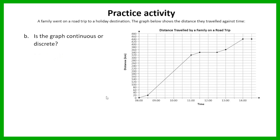The next question: is the graph continuous or discrete? You can see that the points have all been joined, which indicates that this is a continuous graph. It makes sense if you think about it — the family didn't teleport from one location to another. They traveled there over the period of half an hour, so this is something that is measurable, making it a continuous graph.